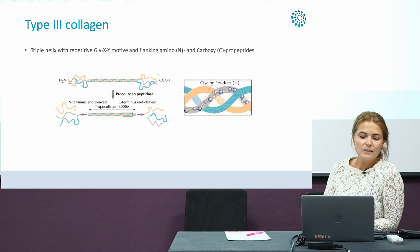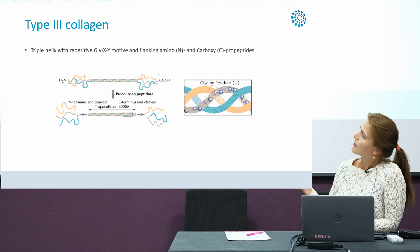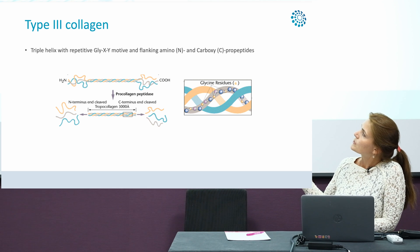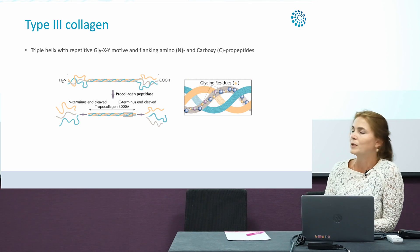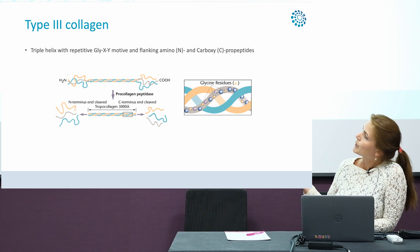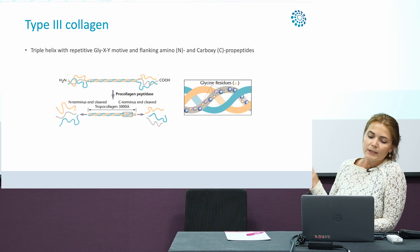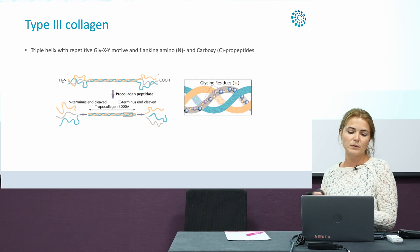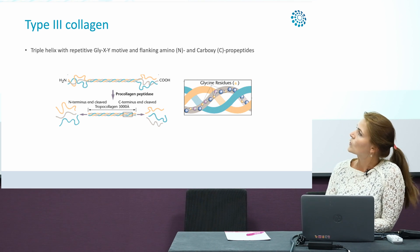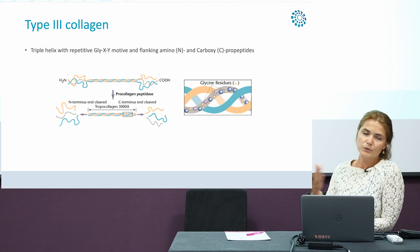Type 3 collagen is a major fibrillar collagen and consists of three identical alpha chains that wind around each other to form a triple helical structure. The main triple helix is flanked at the amino terminal and carboxy terminal sites by propeptides, which are cleaved off during maturation of the collagen molecule. Very importantly, within the triple helical domain, every third amino acid is the smallest glycine residue, which is essential for the structure. Most mutations found in type 3 collagen lead to substitutions of one of these glycine residues.